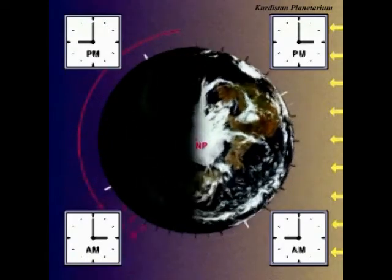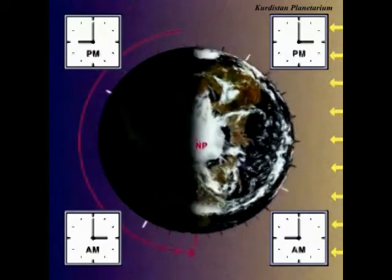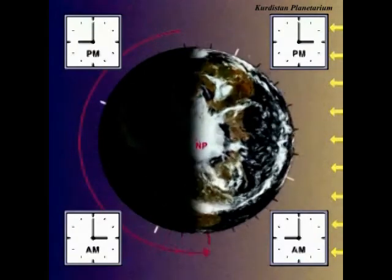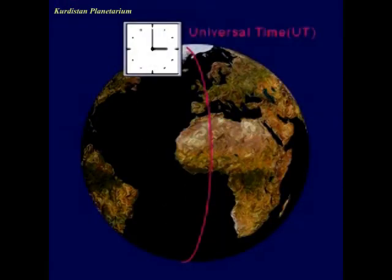Fifteen degrees of longitude makes a difference of one hour. Universal time is the time at zero degrees of longitude and the basis of all civil time. It's used by astronomers and is the same everywhere in the world. The zero longitude line was chosen to go through the former observatory at Greenwich, England.